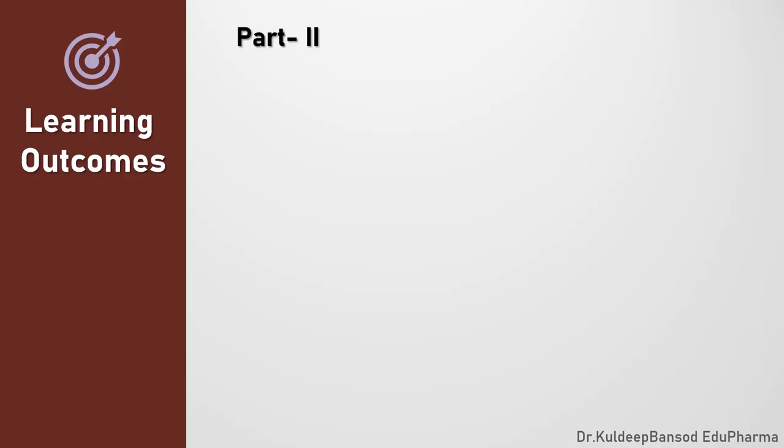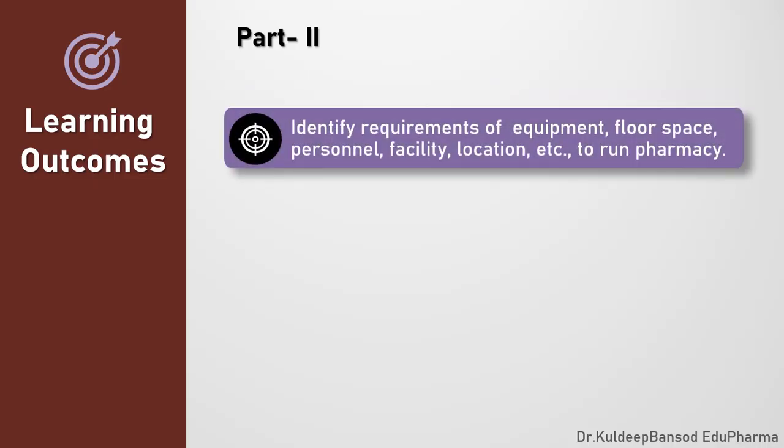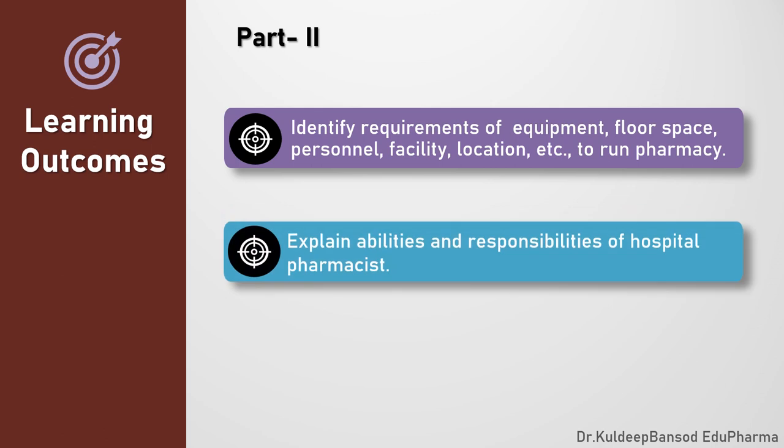In part two, the following learning objectives will be focused: identify requirements of equipment, floor space, personnel, facility, and location required to run the hospital pharmacy, and explain the abilities and responsibilities of the hospital pharmacist.